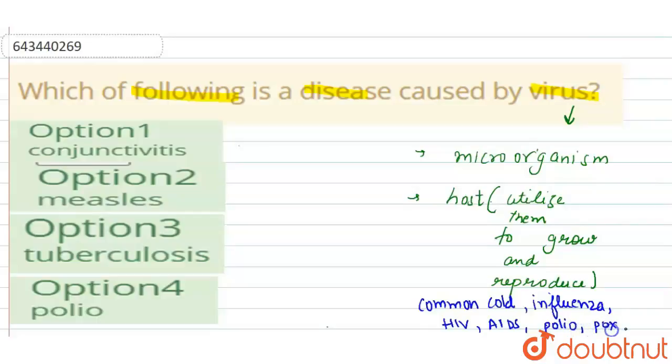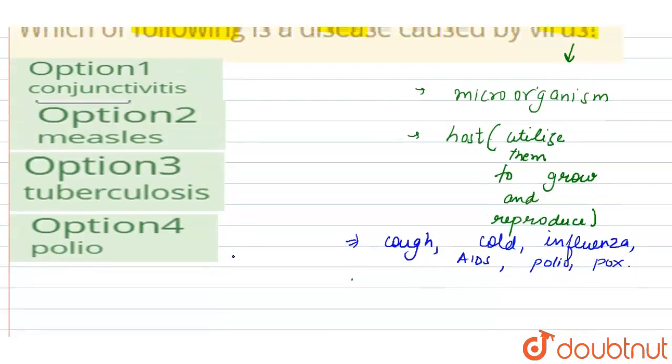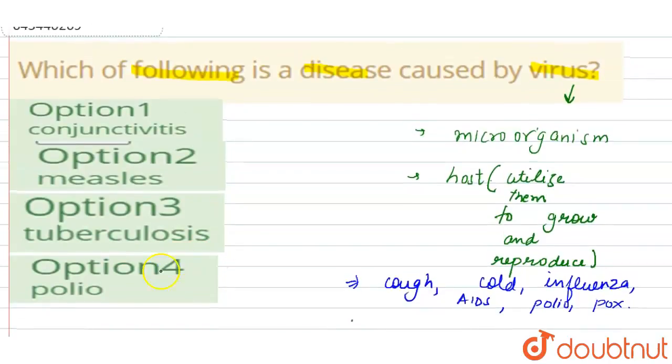Now we have to answer the correct option for this. Let's discuss what are the options and what they mean. First is conjunctivitis, second is measles, third is tuberculosis, and fourth is polio.